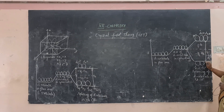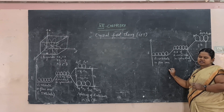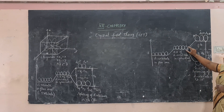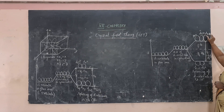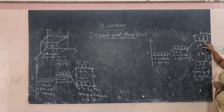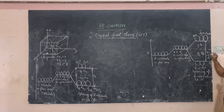In the tetrahedral field, t2g has energy +2/5 delta_t and eg has energy -3/5 delta_t. The d-orbitals in the free ion are dx²-y², dz², dxy, dyz, and dxz. After splitting, eg is the lower energy level with two orbitals, and t2g is the higher energy level with three orbitals. The relationship between tetrahedral and octahedral crystal field splitting energy is: delta_t = (4/9) delta_o.